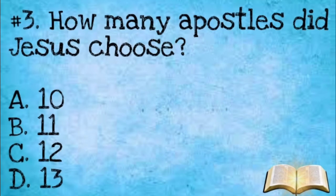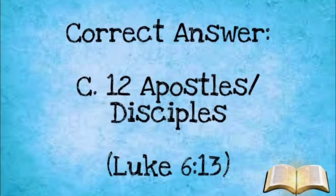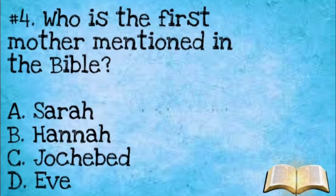Question number three: How many apostles did Jesus choose? A: 10. B: 11. C: 12. D: 13. The correct answer is letter C, 12 apostles.